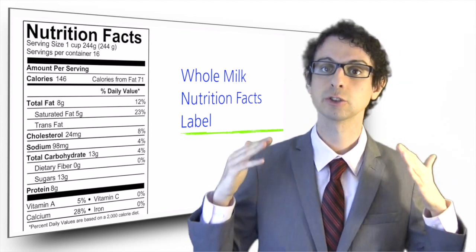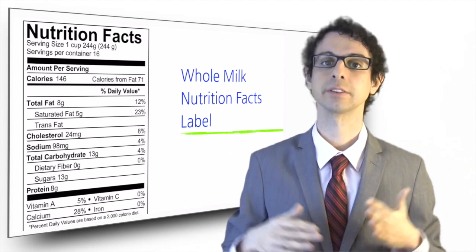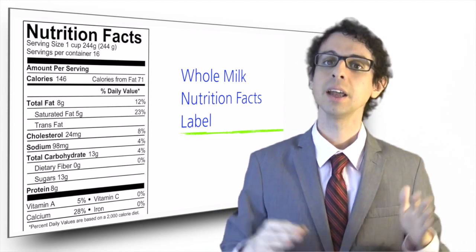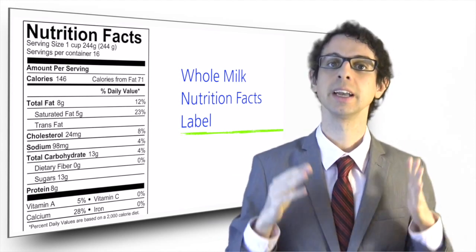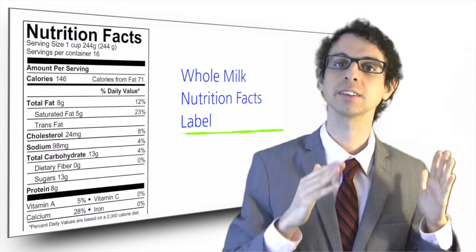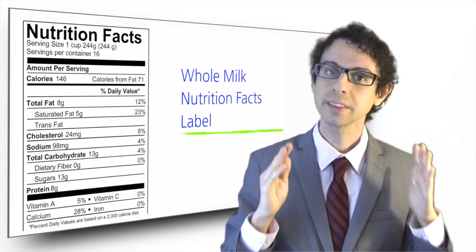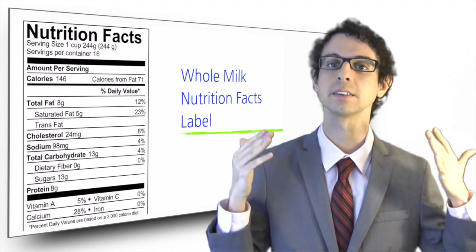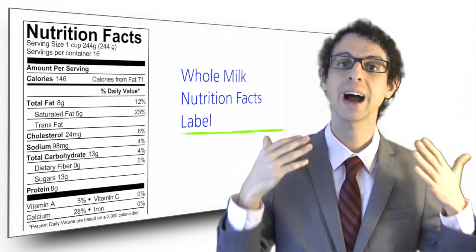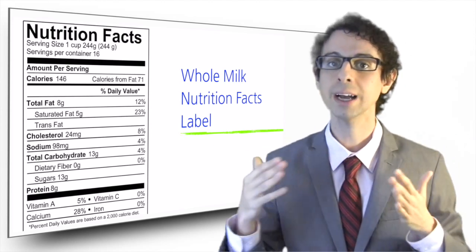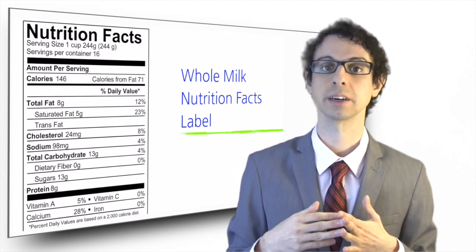Moving on, the label tells us how much cholesterol and how much sodium are present in our milk. Then it shows us how many total carbohydrates are in our cup of milk — 13 grams. You have to be very careful here: the Nutrition Facts label includes dietary fiber in the total carbohydrates count, so these are not just digestible carbs. I personally think this is very confusing, but that's how it is. In the case of milk, this is meaningless because milk provides no fiber and the sugar lactose accounts for all those 11 grams. But if we were looking at the label of a fiber-containing food, we would have to subtract the grams of dietary fiber from the grams of total carbs to find out how many digestible carbs are in there.